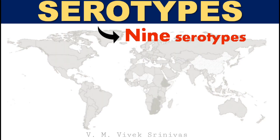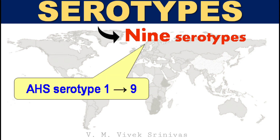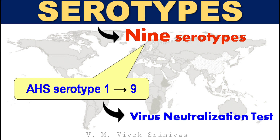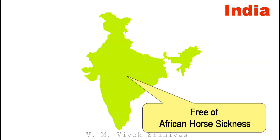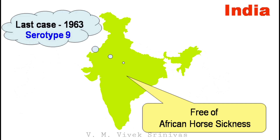There are nine antigenically distinct serotypes of African Horse Sickness Virus, named serotype 1 to 9, identified by the virus neutralization test. India is free of African Horse Sickness infection. The last case was reported in 1963, which was serotype 9 African Horse Sickness Virus.